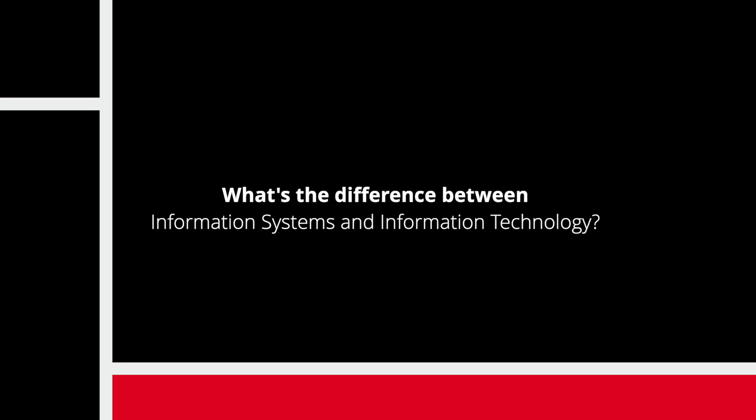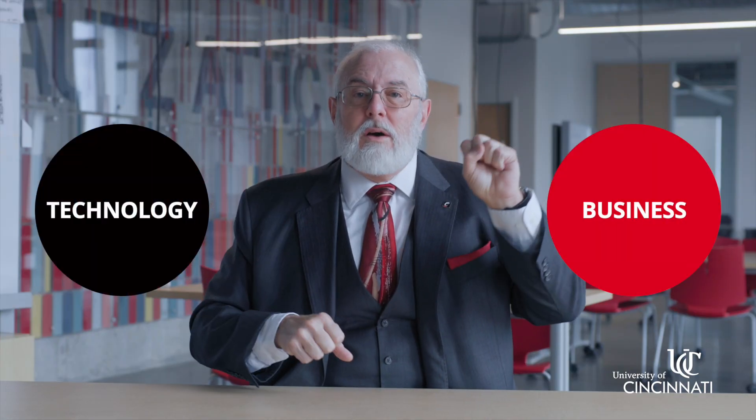Think of two circles. There's a circle called business — that's where you learn about business and how business uses systems. There's the technology circle, which is where you learn about the technology, the programming, the databases, and those kind of things. If you look at them as two separate circles, the business circle is the business school, and the technology circle from a theoretical point of view is IT.